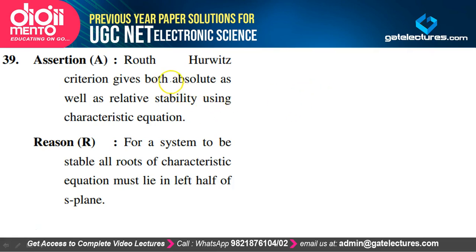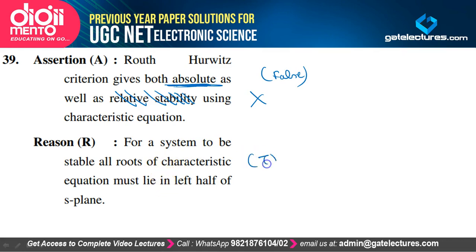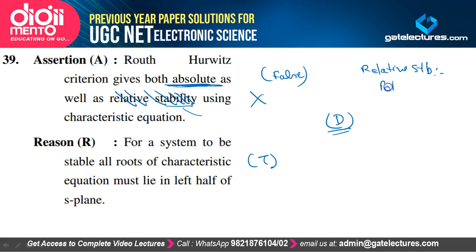Routh-Hurwitz criteria gives both absolute as well as relative stability — absolutely wrong. It is only used for determining absolute stability, not relative stability. For relative stability we use polar plots and Nyquist plots. For a system to be stable, all roots of the characteristic equation must lie on the left of the s-plane — absolutely true. So assertion A is false and reason R is true. Option D is the correct option.